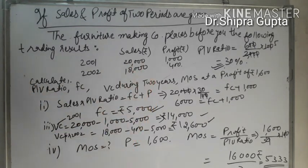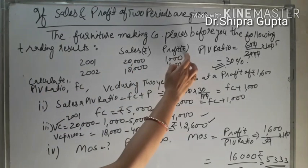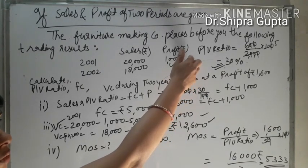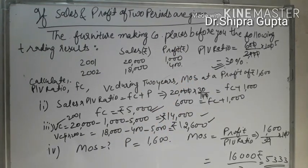So we solved this question by the help of PV ratio when two years' sales or profit is given. If in the question loss is given, then minus value we will deduct—minus minus will come plus, then we will add both values. This question is solved by this formula. If you face any problem, you can ask me and comment. Thank you.